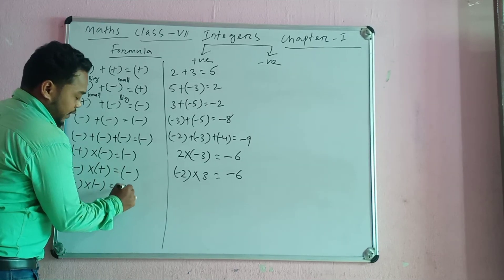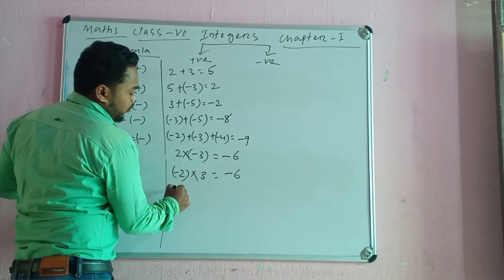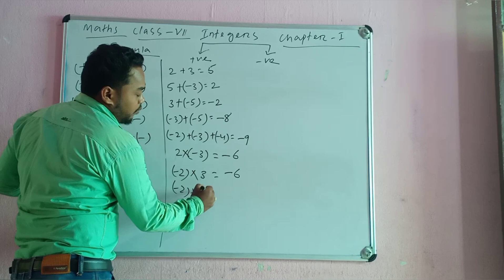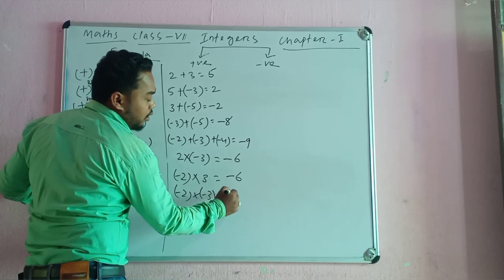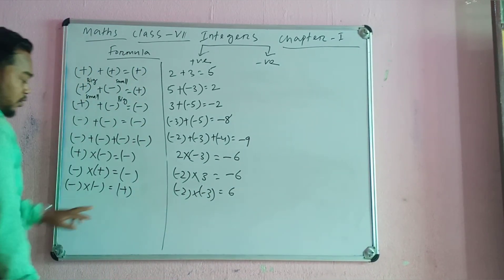Suppose minus 2 into minus 3. What happens with 2 into minus 3? Plus 6.